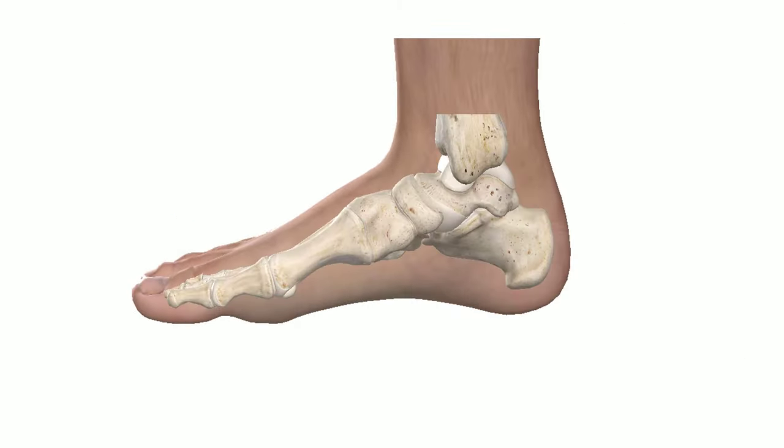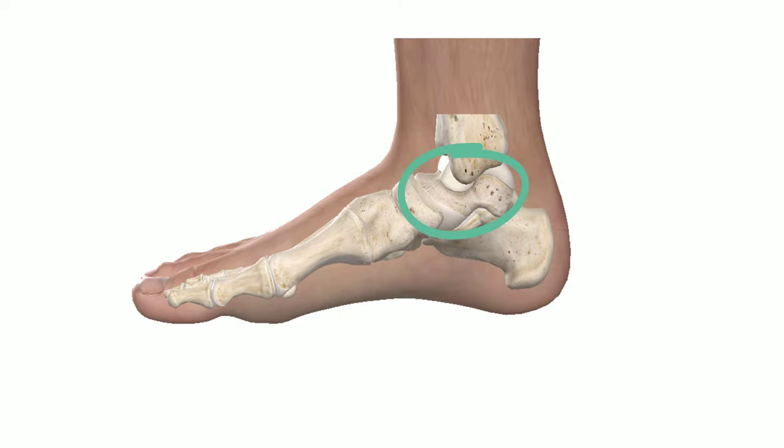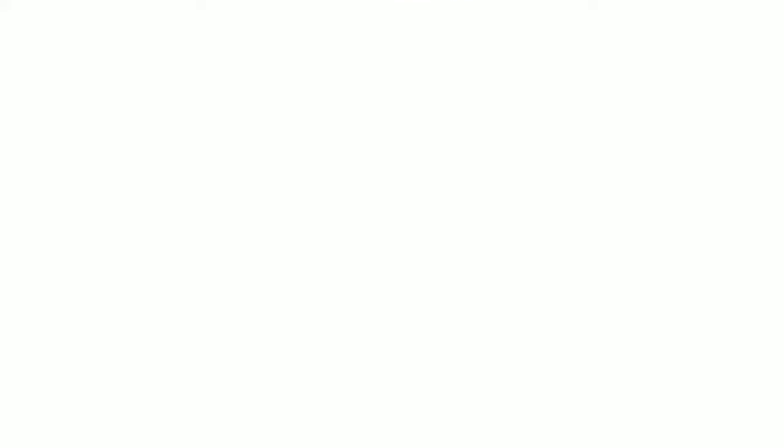Subtalar joint is composed of talus articulating with calcaneus. The joint possesses three degrees of freedom in the three cardinal planes.